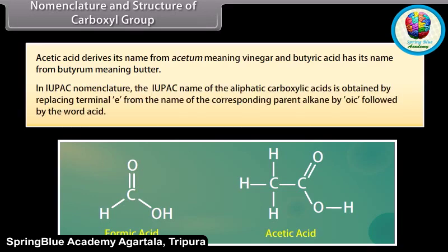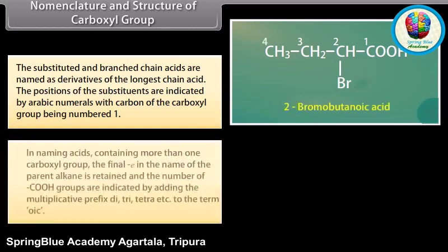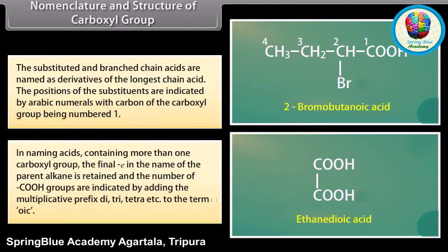In IUPAC nomenclature, the IUPAC name of aliphatic carboxylic acids is obtained by replacing the terminal -e from the name of the corresponding parent alkane with -oic, followed by the word acid. The substituted and branched-chain acids are named as derivatives of the longest chain acid. The positions of the substituents are indicated by Arabic numerals, with the carbon of the carboxyl group being number 1. In naming acids containing more than one carboxyl group, the final -e in the name of the parent alkane is retained and the number of carboxyl groups are indicated by adding the multiplicative prefix di, tri, tetra, etc.